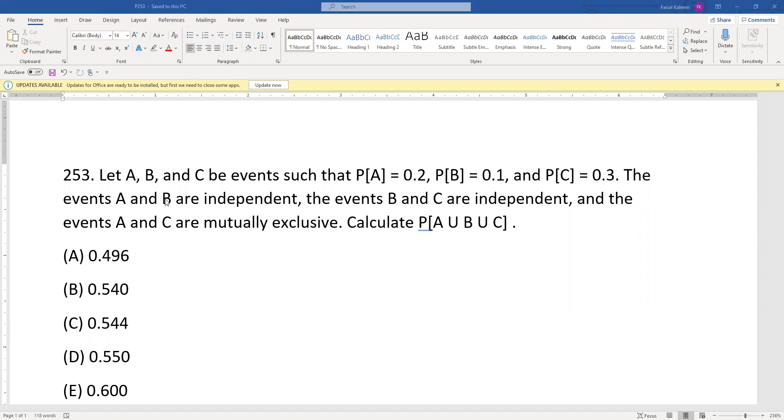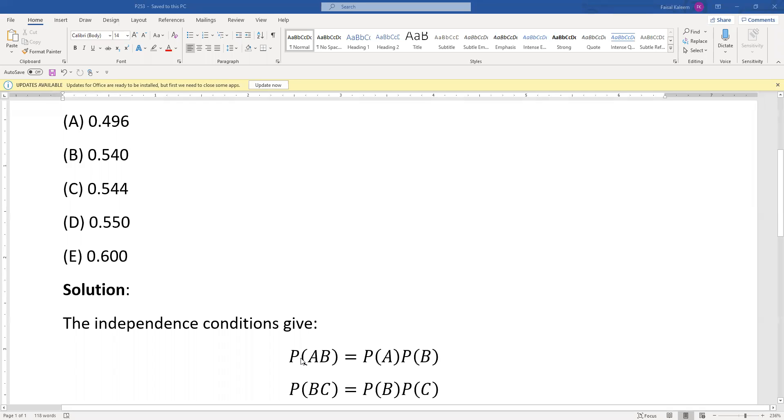A and B being independent means the probability of A and B equals P(A) times P(B). Remember, this was our convention of A and B – we just write it as AB. Similarly, B and C are independent, so probability of BC equals P(B) times P(C).